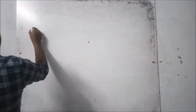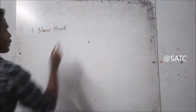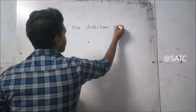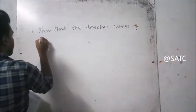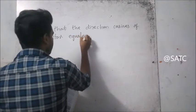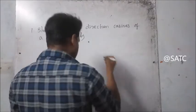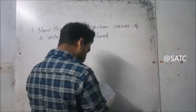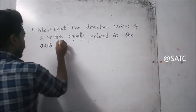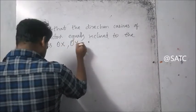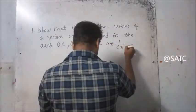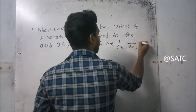The direction cosine of a vector equally inclined to the axes OX, OY, and OZ. The answer is one by root three, one by root three, one by root three — all equal.